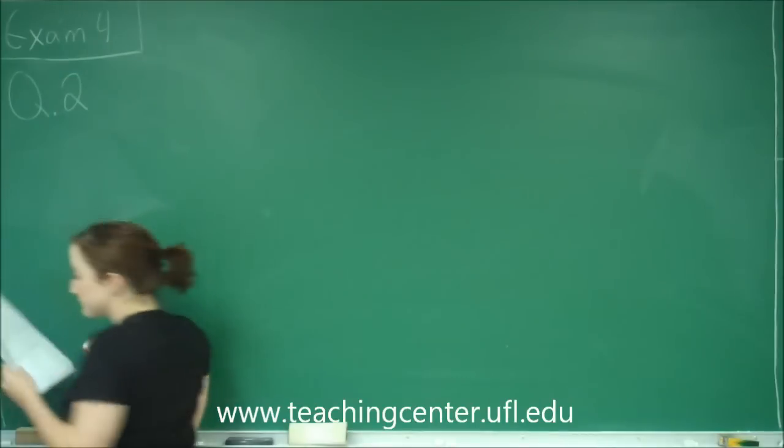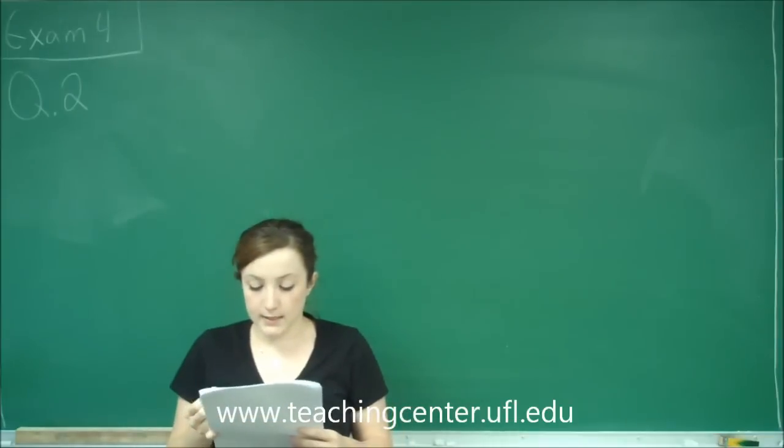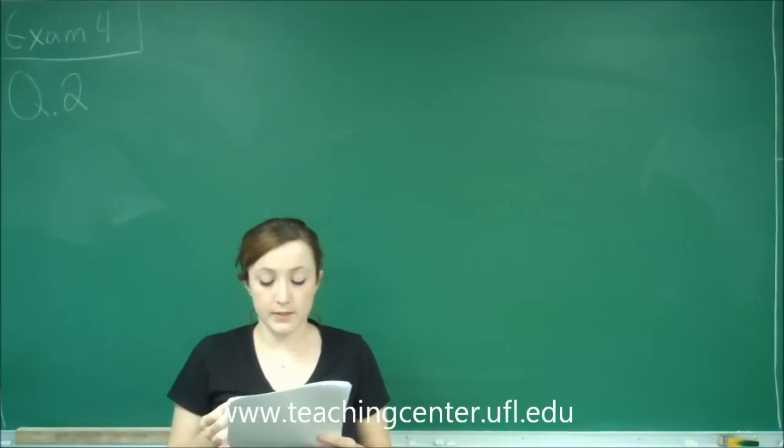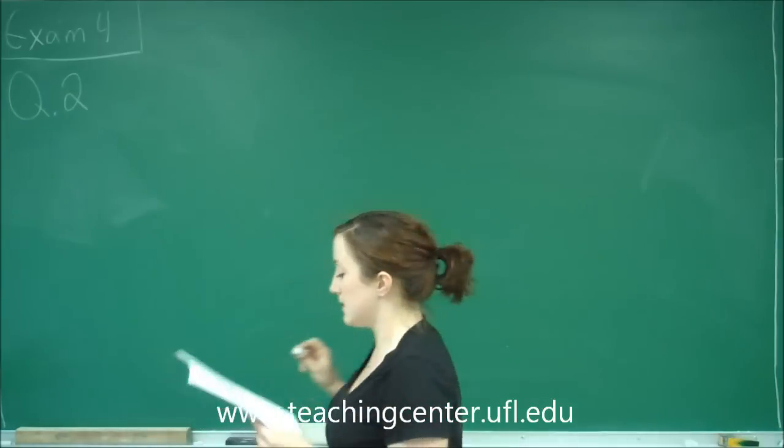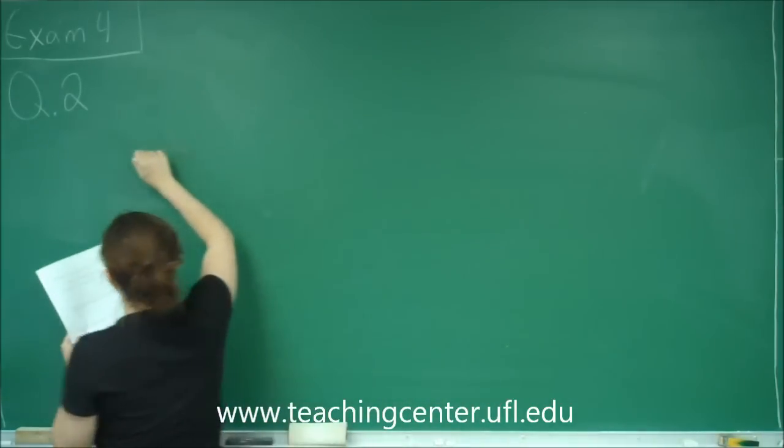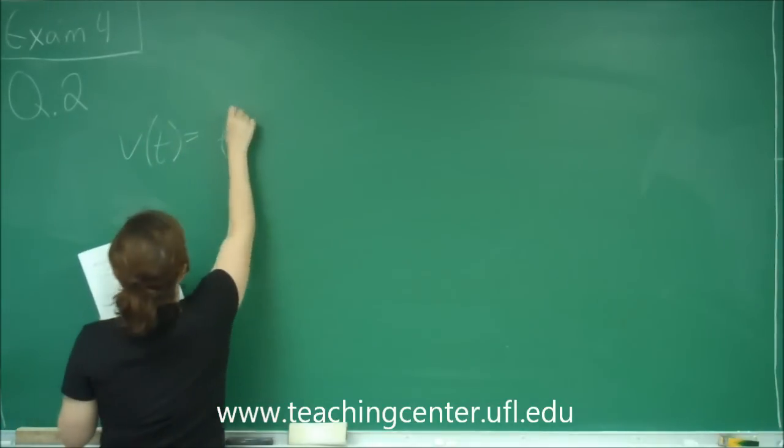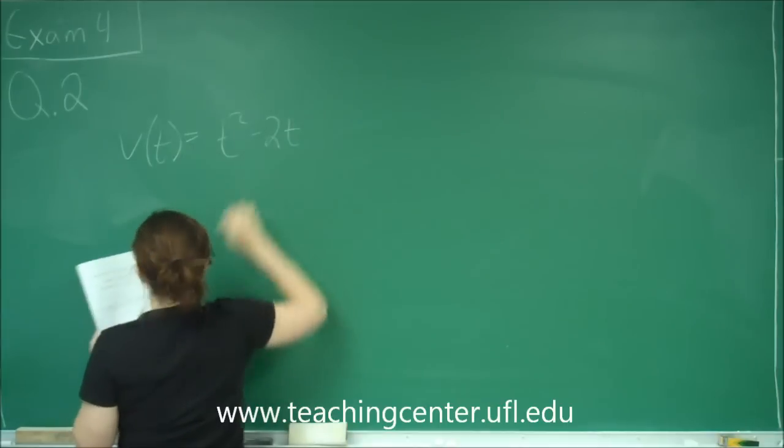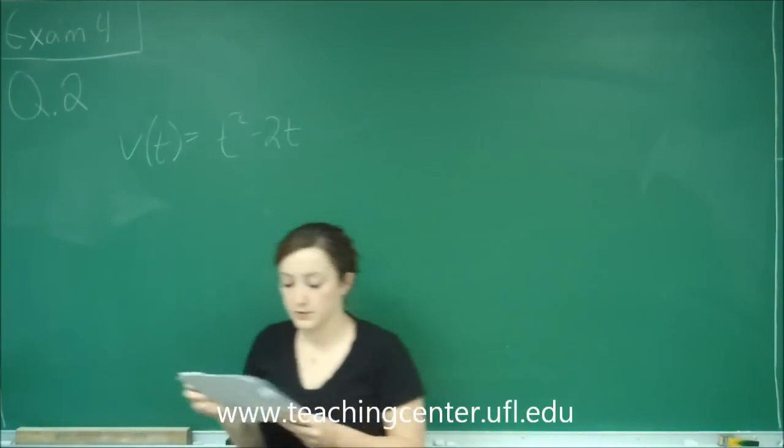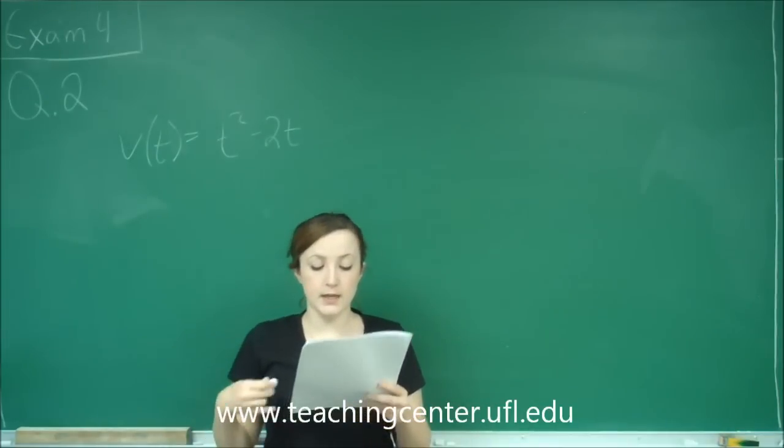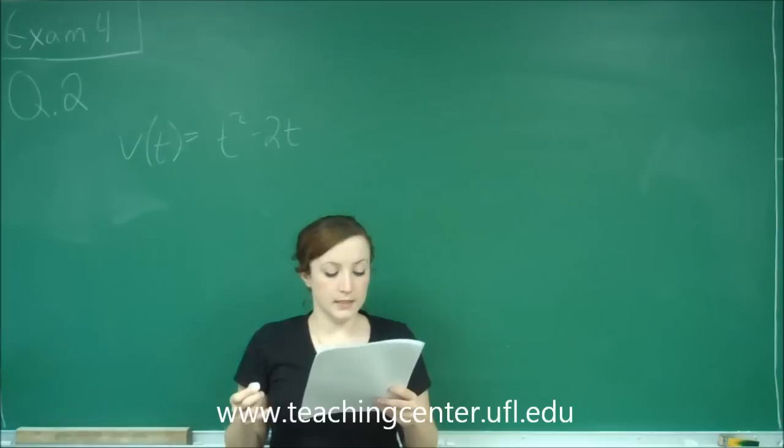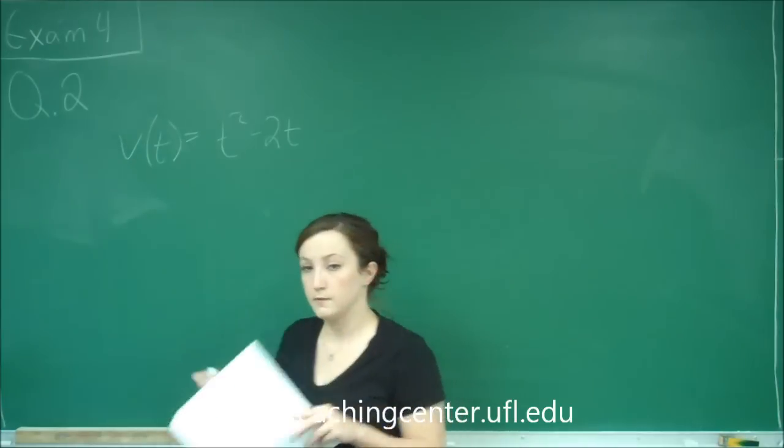Question number 2: a particle moves in a straight line so that its velocity at time t is t squared minus 2t. So that's our velocity, and that's important to remember, feet per second. We want to find the total distance traveled by the particle on the time interval from 0 to 4.